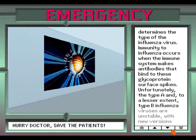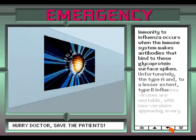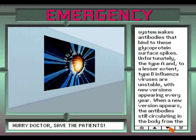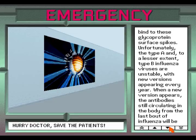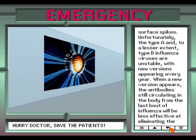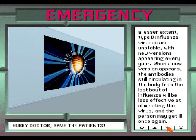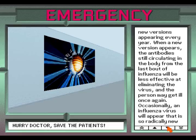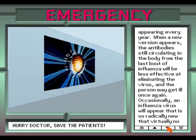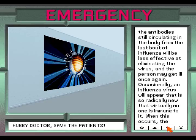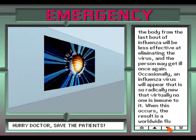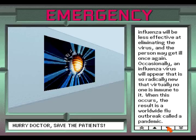Immunity to influenza occurs when the immune system makes antibodies that bind to these glycoprotein surface spikes. Unfortunately, the type A and, to a lesser extent, type B influenza viruses are unstable, with new versions appearing every year. When a new version appears, the antibodies still circulating in the body from the last bout of influenza will be less effective at eliminating the virus, and the person may get ill once again.